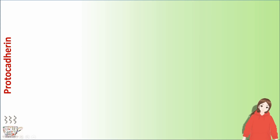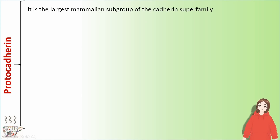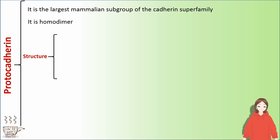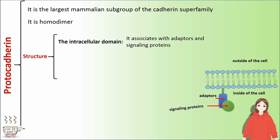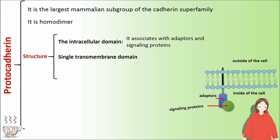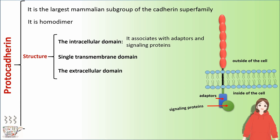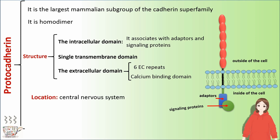Proto-cadherin is the largest mammalian subgroup of the cadherin superfamily. It is a homodimer with three domains: the extracellular domain that associates with adapters and signaling proteins, a single transmembrane domain, and an intracellular domain. It has six EC repeats and is a calcium-binding domain. Proto-cadherins are found in the central nervous system.